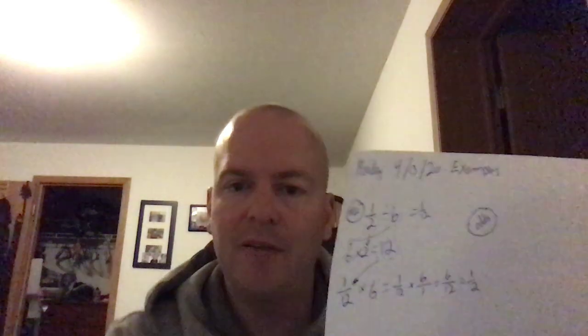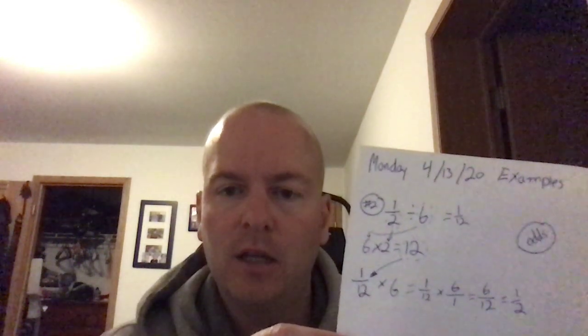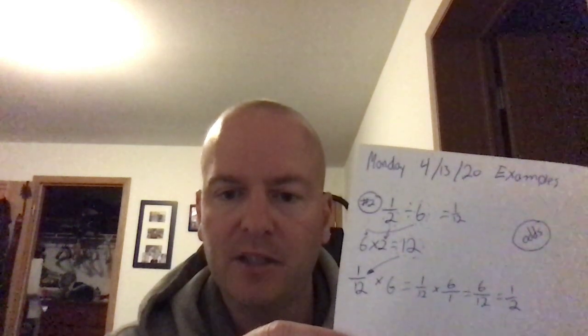You have one-half, and that is being divided by six. What you want to do is take the denominator and take the whole number, multiply it, and you get twelve. Six times two is twelve. Sorry to insult your intelligence, but there it is. Turn that into a fraction: one-twelfth times six. Then to turn six into a fraction, put a one underneath it.